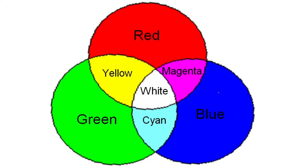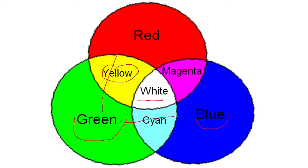A colored diagram shows the same concept: red, green, and blue are primary colors. When red, green, and blue are mixed together, you get white color. Mixing red and green gives yellow. Mixing green and blue gives cyan. Mixing blue and red gives magenta. So yellow, cyan, and magenta are secondary colors, while red, green, and blue are primary colors.